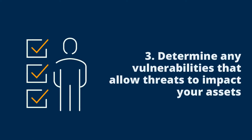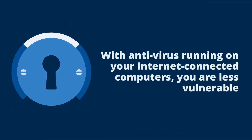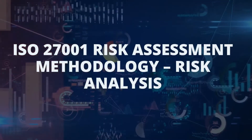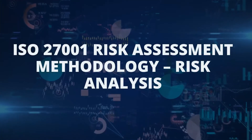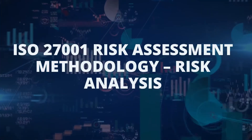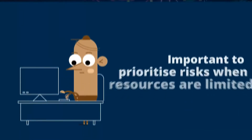The third element of risk identification is the need to determine if there are any vulnerabilities that would allow a threat to cause an impact on your asset. For example, if you have an antivirus system installed and running on your internet-connected Windows computers, you are less vulnerable to this particular threat than if you didn't.